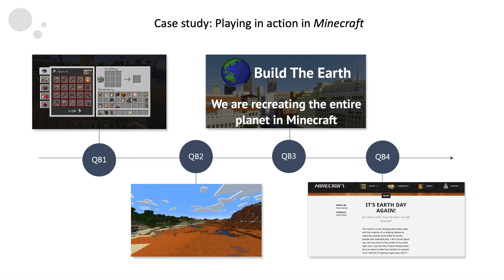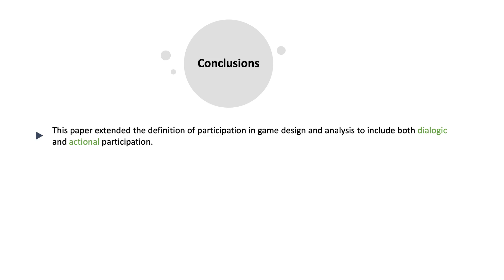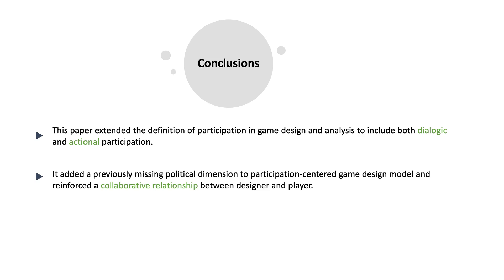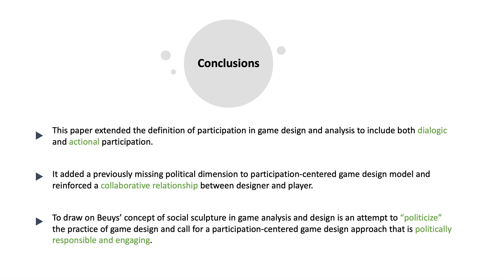These two examples demonstrated new ways of understanding dialogue and action in computer games, concerning how players' collective dialogue and action can have a potential impact on social and political reality. By drawing on the concept of social sculpture, this paper extended the definition of participation in game design and analysis to include both dialogic and action participation, which added a previously missing political dimension to the traditional participation-centered game design model and reinforced a collaborative relationship between designer and player. In this sense, to draw on social sculpture in game analysis and design is an attempt to politicize the practice of game design and call for a participation-centered game design approach that is politically responsible and engaging. Such politicization of participation is particularly important in our hyper-industrial age, where participation itself has become the commodity.